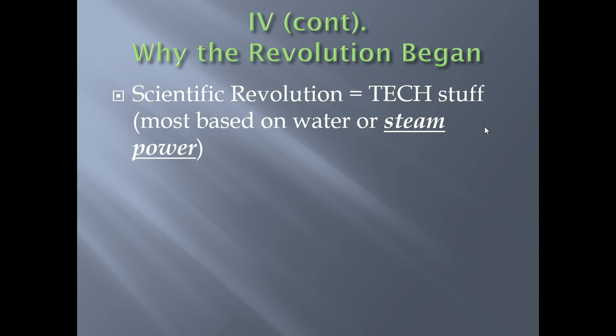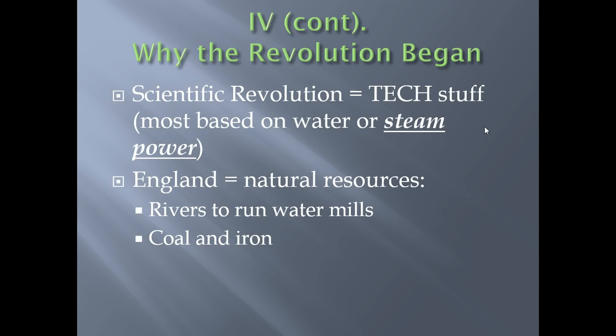In addition, England had a lot of really strong natural resources — a lot of flowing rivers to run water mills, and a lot of coal and iron close to the surface and close to already established population centers, and that is a huge deal. Please put a little star beside coal and iron. We're going to be talking about that in just a little bit.